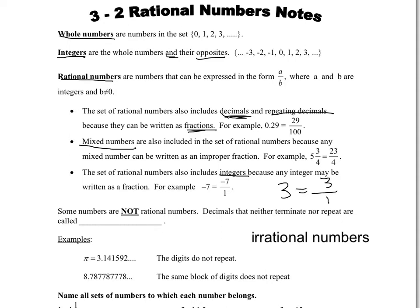So it's kind of like you have the big group of rational numbers, and then within that there's a group of integers, and then within that there's the group of whole numbers.